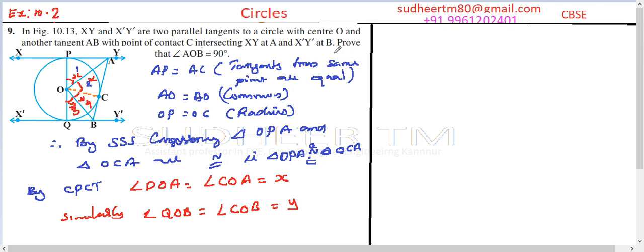Now, PQ is the diagonal. Also, angle POA plus angle COA plus angle COB plus angle QOB is equal to X plus X plus Y plus Y, which equals 180 degrees.